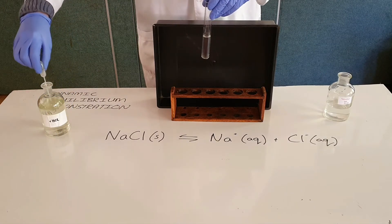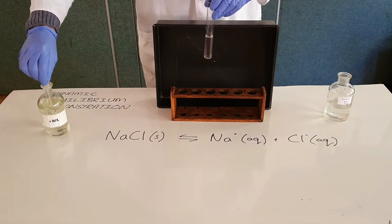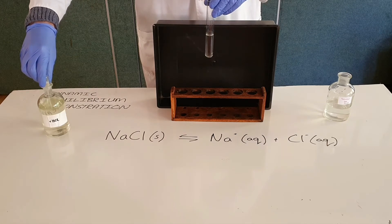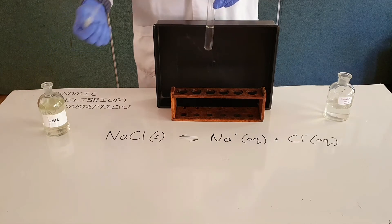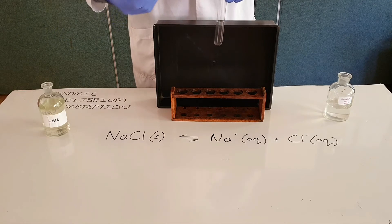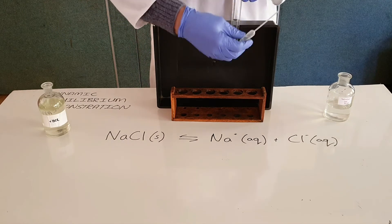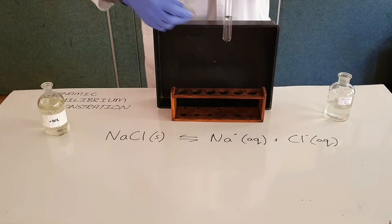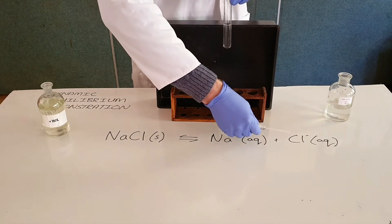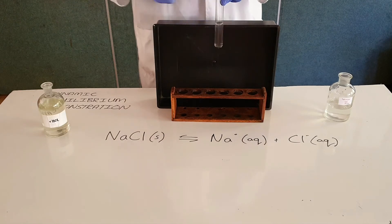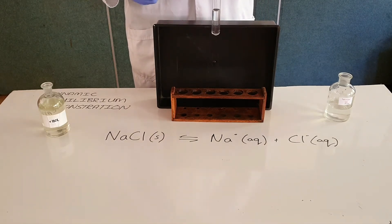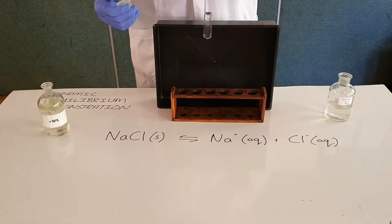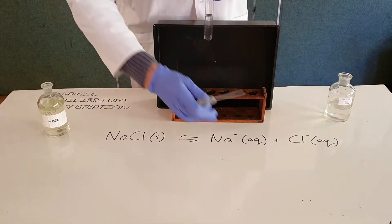This demonstrates the common ion effect. If we add hydrochloric acid, which ionizes to form hydrogen ions and chloride ions, we increase the concentration of chloride ions in solution and thereby upset the equilibrium.